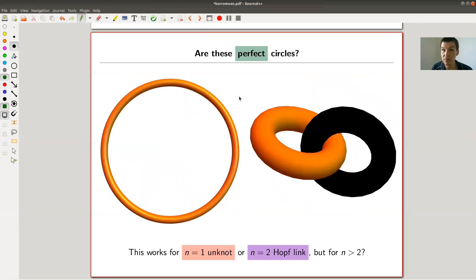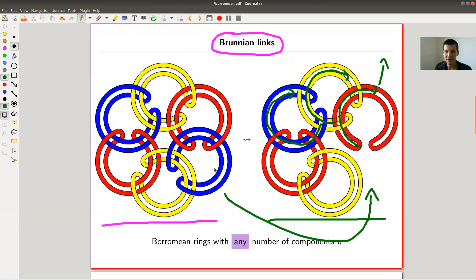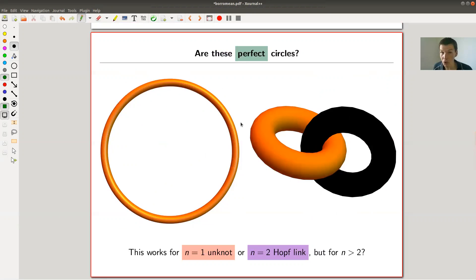These are called Brunian links or Borromean rings for a higher number of components. The question, the theorem I'm going to talk about, I would like to address is: in what sense are actually those components of a Borromean link really perfect circles? Here you can definitely see that these are not perfect circles, they are distorted. So can you build those Borromean rings out of perfect circles?